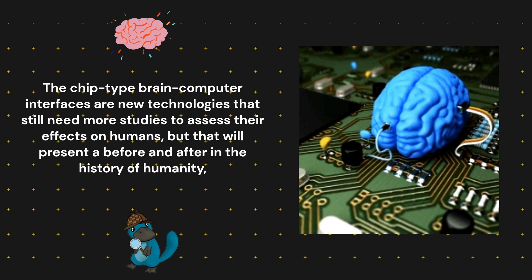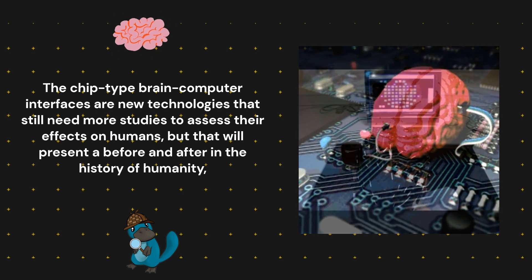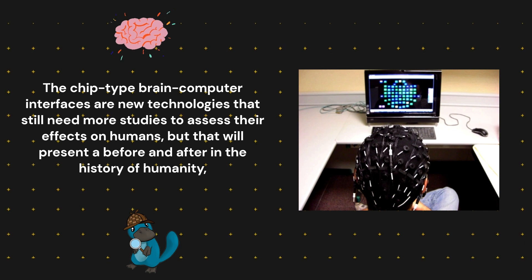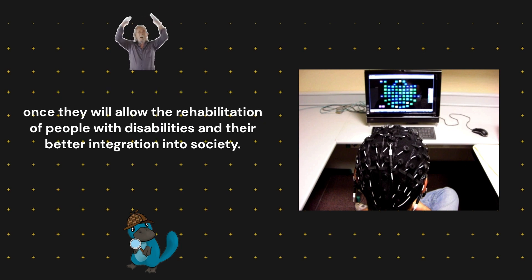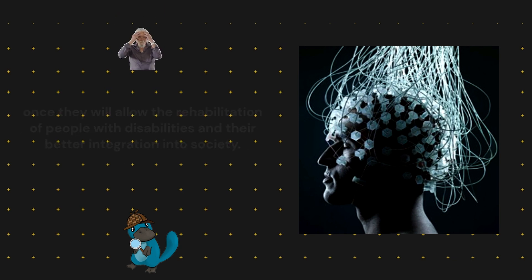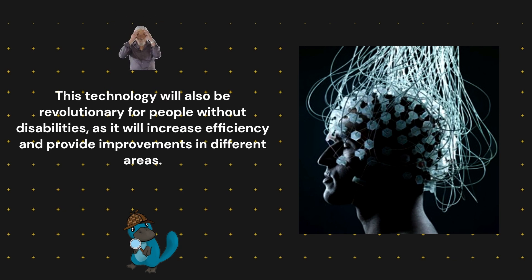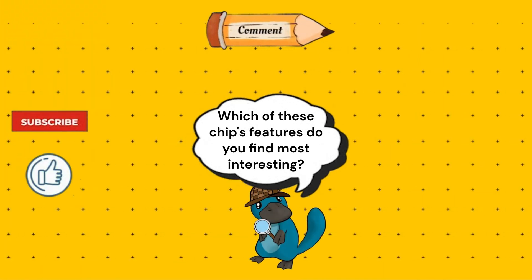Conclusion. Chip-type brain-computer interfaces are new technologies that still need more studies to assess their effects on humans, but will present a before and after in the history of humanity and technology, as they will allow the rehabilitation of people with disabilities and their better integration into society. This technology will also be revolutionary for people without disabilities, as it will increase efficiency and provide improvements in different areas. If you liked it, don't forget to like and subscribe to the channel, and tell me in the comments which of these chip features you find most interesting.